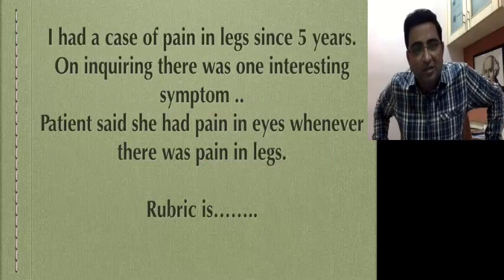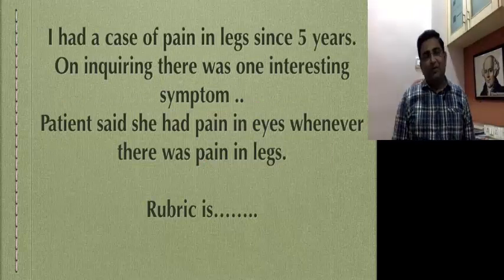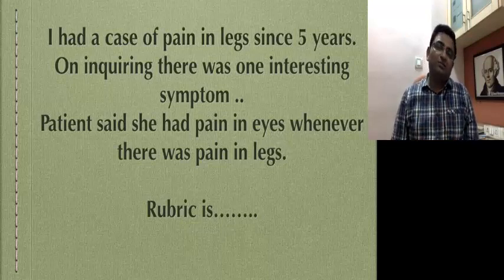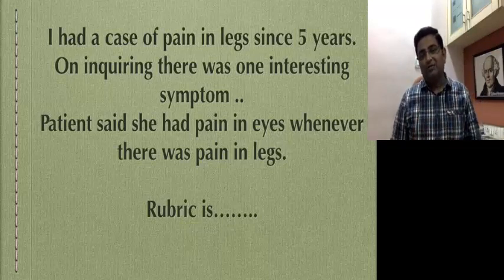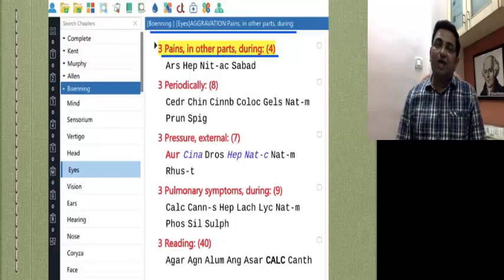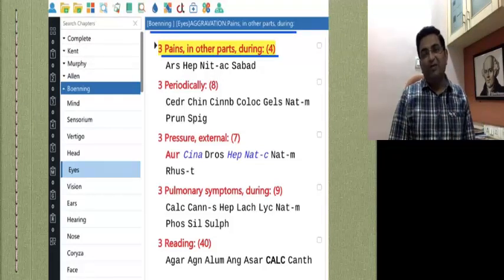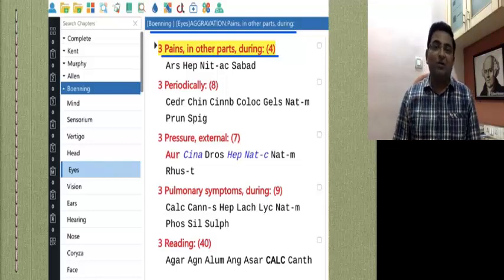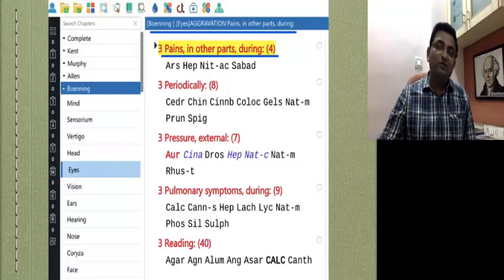Another very interesting case: I had a patient with pain in legs for 5 years. On inquiring, there was one interesting symptom. The patient said she had pain in eyes whenever there was pain in the legs. This is a very interesting symptom because there is no relation between the eyes and legs. But I searched in the repertory, and in Boericke & Hahnemann under the eye section, I found the exact symptom — Eye aggravation when there is pain in other parts. I took this one rubric and two or three other rubrics and I prescribed Arsenicum. And to my surprise, that pain vanished completely within one month, which had previously persisted for 3 years.